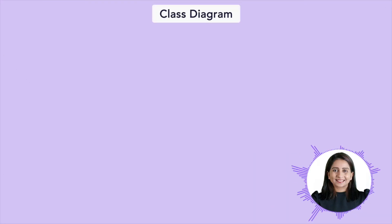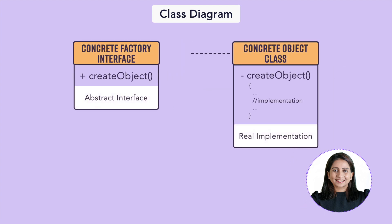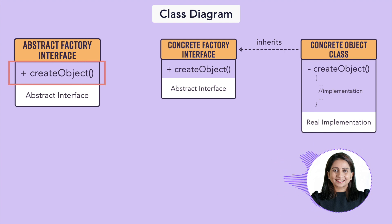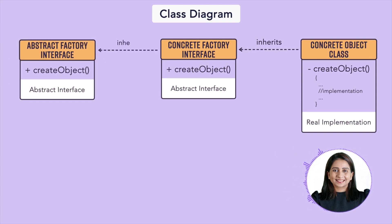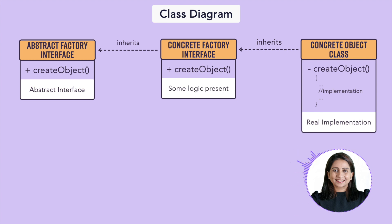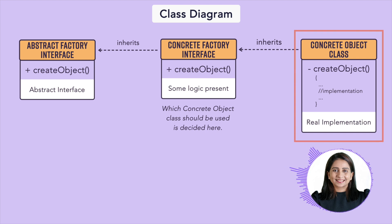The class diagram of abstract factory method design pattern is very similar to the factory method design pattern, except there is one extra interface on top. That interface provides a function to create objects, which internally uses concrete factories. The exact instantiation of objects lies in the concrete object classes. There is also some logic in the concrete factory implementation where it is decided which factory will be utilized to create the concrete object.